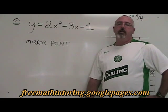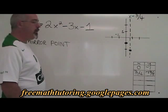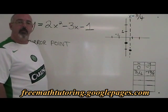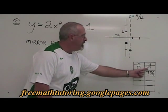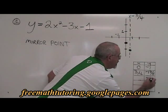To find the mirror point, the point symmetrical to the y-intercept, we must know that the y-coordinate of the mirror point will be the same as the y-coordinate of the y-intercept. Our y-intercept's y-coordinate is negative 1, so the mirror point's y-coordinate is negative 1.